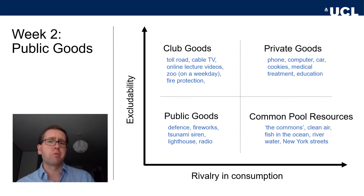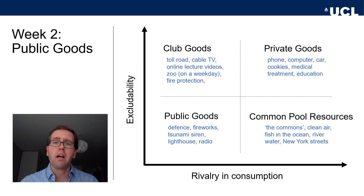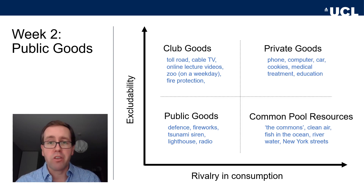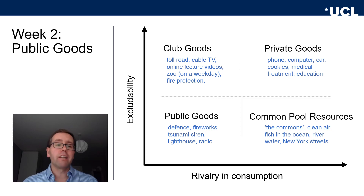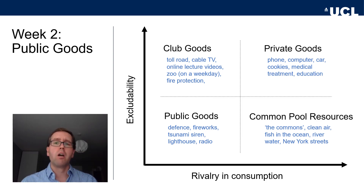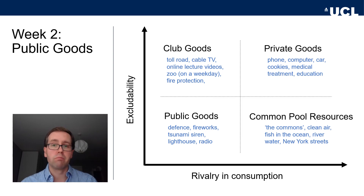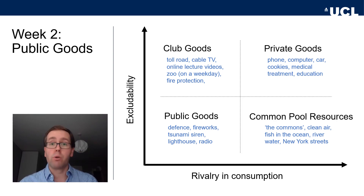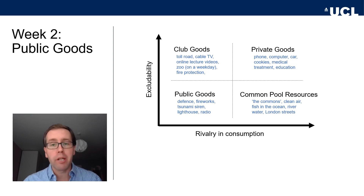A zoo on a quiet weekday is also a club good — you pay a fee to enter, but your enjoyment of the animals isn't really impacted by other visitors. Fire protection offers a curious case: in some U.S. instances, fire departments only respond to people who paid their local taxes. While there's usually no rivalry in consumption — not many fires break out simultaneously — exclusion is possible. We've now seen many examples of public goods, club goods, common pool resources, and private goods.